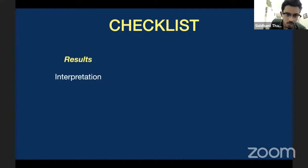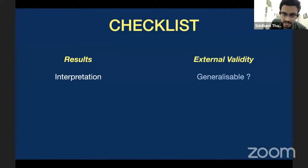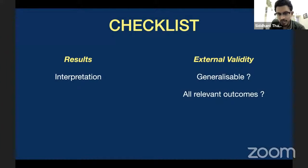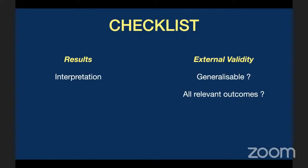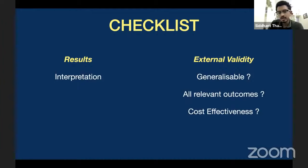You look at the results and see how you can interpret them. For external validity, you need to see whether the results of the trial are applicable to your current patient population, whether all relevant outcomes are measured, and whether the intervention is cost-effective. So you have internal validity, results, and external validity — this is the gross outline with which you will appraise the paper.